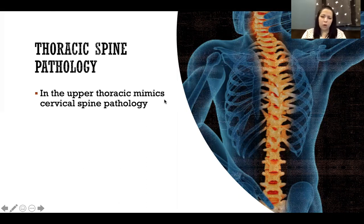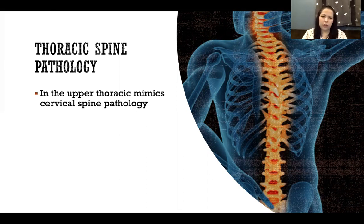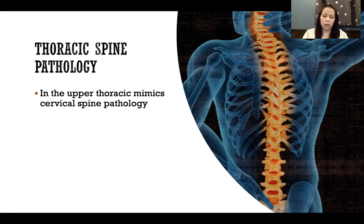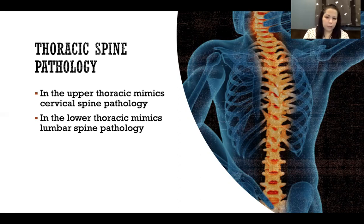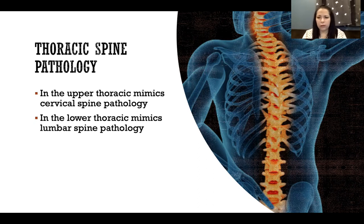Thoracic spine pathology: because the thoracic spine has very little mobility, we often experience the effects of its pathology above or below it. Injury or pathology in the upper thoracic is most often experienced as pain or dysfunction in the cervical spine, which must compensate for the thoracic dysfunction. Similarly, lower thoracic pathology forces the lumbar spine to move incorrectly and generate improper forces to compensate. In general, thoracic spine injuries are felt more in the cervical and lumbar spines.